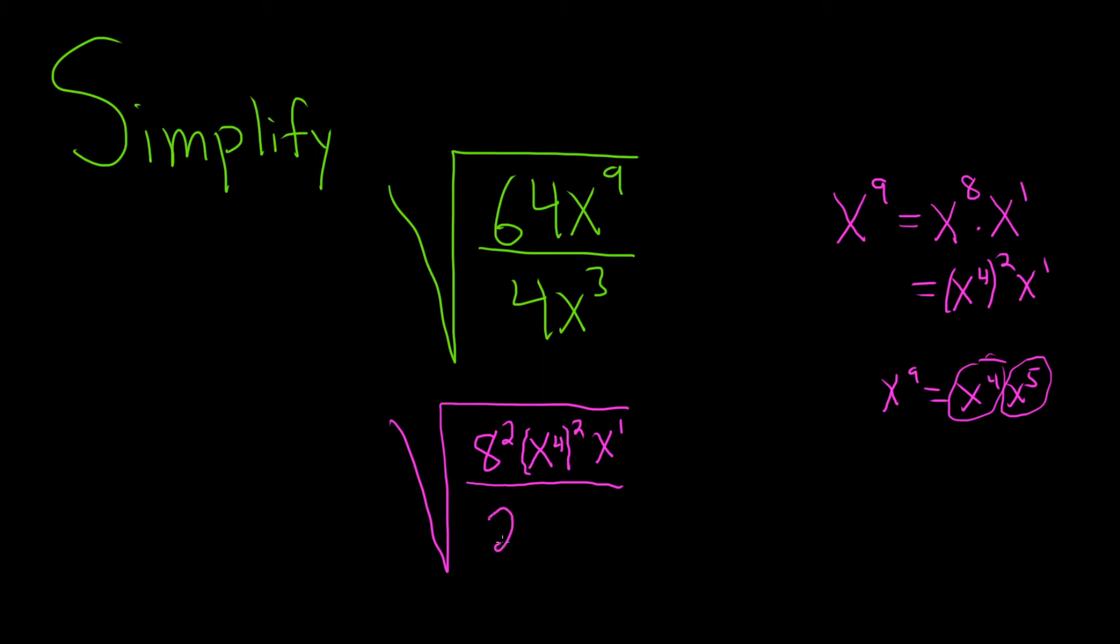So 4 is 2 squared. And then x cubed, again, we can do something with that. We can write that as x squared times x to the 1. And again, the goal is to have everything, as many things as possible squared.